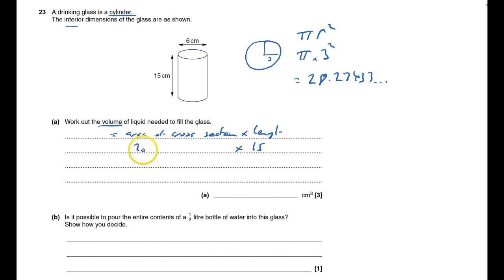So the volume is 28.27433, whatever that number is, times it by 15 is 424.115. It doesn't say what accuracy, so that'll do.